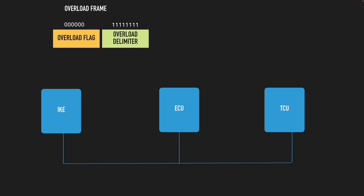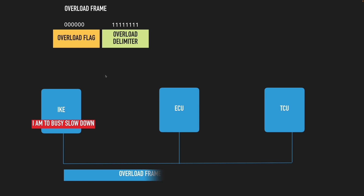The overload frame looks almost identical to the error frame. The difference is the context: rather than detecting a wrong data frame, a node receives the data fine but is too busy updating its internal state. It sends the overload frame to request that other nodes slow down. The ECUs and TCUs receive the overload frame, understand that the previous message was not received in error, and delay their next transmission accordingly.